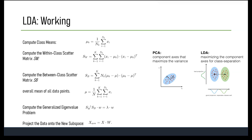The transformed dataset X_new will have reduced dimensions and can be used for classification or other downstream tasks, while preserving as much class discriminatory information as possible. LDA seeks a transformation matrix W that maximizes the between-class scatter while minimizing within-class scatter, creating a subspace where classes are well separated.